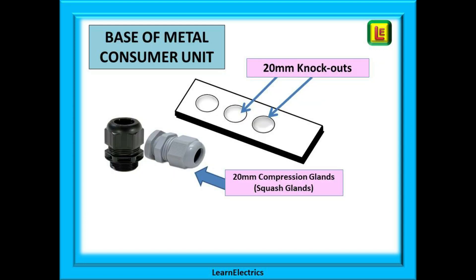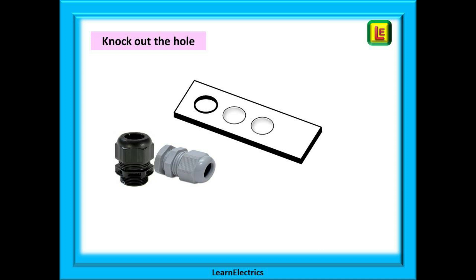We are showing here just the base of a standard metal consumer unit. Along this underside there are usually a row of knockouts. The metal is semi-sheared so that if we strike the knockout sharply with a hammer we will have a nice round hole of 20 millimeters diameter, just perfect to install a 20 millimeter compression gland or squash gland as they are often called.